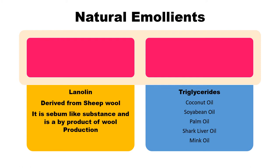Emollients can be classified on the basis of two categories: first, by their sources — natural or synthetic. Natural emollients come from two basic sources. The first is triglycerides from both plants and animals. Triglycerides are the fatty components of plants and animals. Examples of plant fatty acids include coconut oil, soya bean oil, and palm oil. Since they come from plant sources, they are highly greasy, non-polar, and work as emollients in herbal preparations.